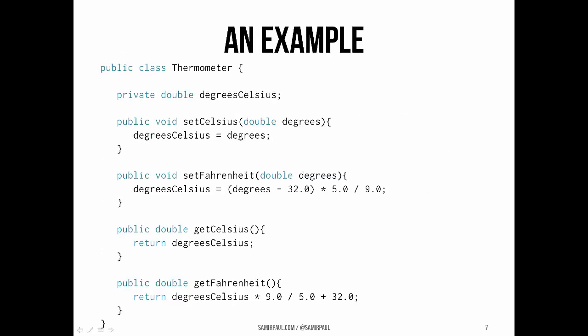Before we get to the code that uses the try-catch, we need to review the Thermometer class it will use. This class defines a thermometer object with a single instance variable, degreesCelsius. It has a setCelsius method, a setFahrenheit method that takes a temperature in Fahrenheit and converts it to Celsius and stores it in the instance variable, a getCelsius getter, and a getFahrenheit method that returns the Fahrenheit version of the temperature. Now we can use it.